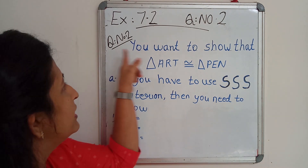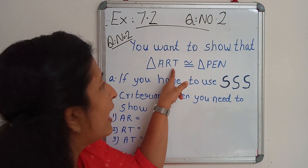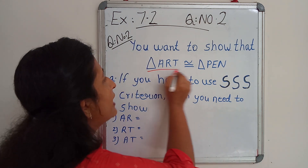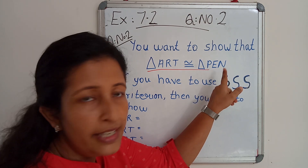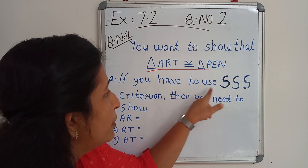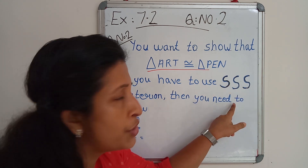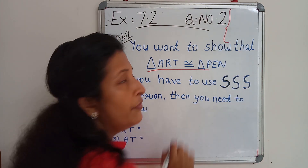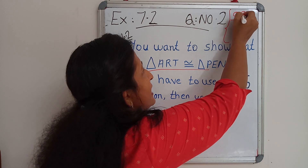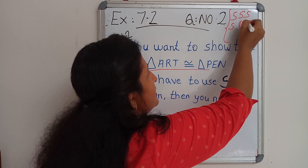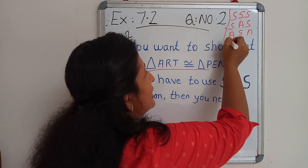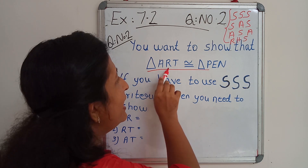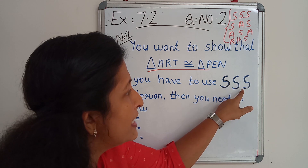Question number 2 says that if you want to show that triangle ART is congruent to triangle PEN, in your question paper you are going to prove that triangle ART is congruent to triangle PEN. If you have to use the SSS criterion, then you need to show certain things. We have 4 criteria: SSS, SAS, ASA, and RHS. You can use any one for proving this.